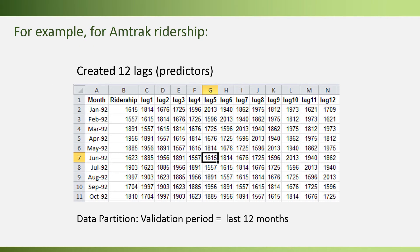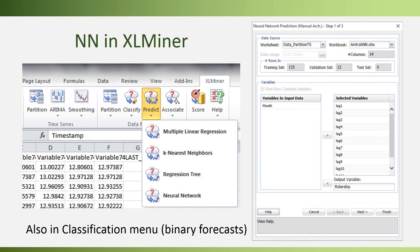Here's an example of a spreadsheet created for the Amtrak ridership. We decided to capture seasonality using 12 lags, then partitioned the data keeping the last 12 months in our validation period. To run a neural network in XLMiner, we use the Predict menu for numerical forecasts, or the Classify menu for a binary outcome. In either case, we provide the inputs and outputs — in our example, the output is the ridership column and the inputs are the 12 lags.